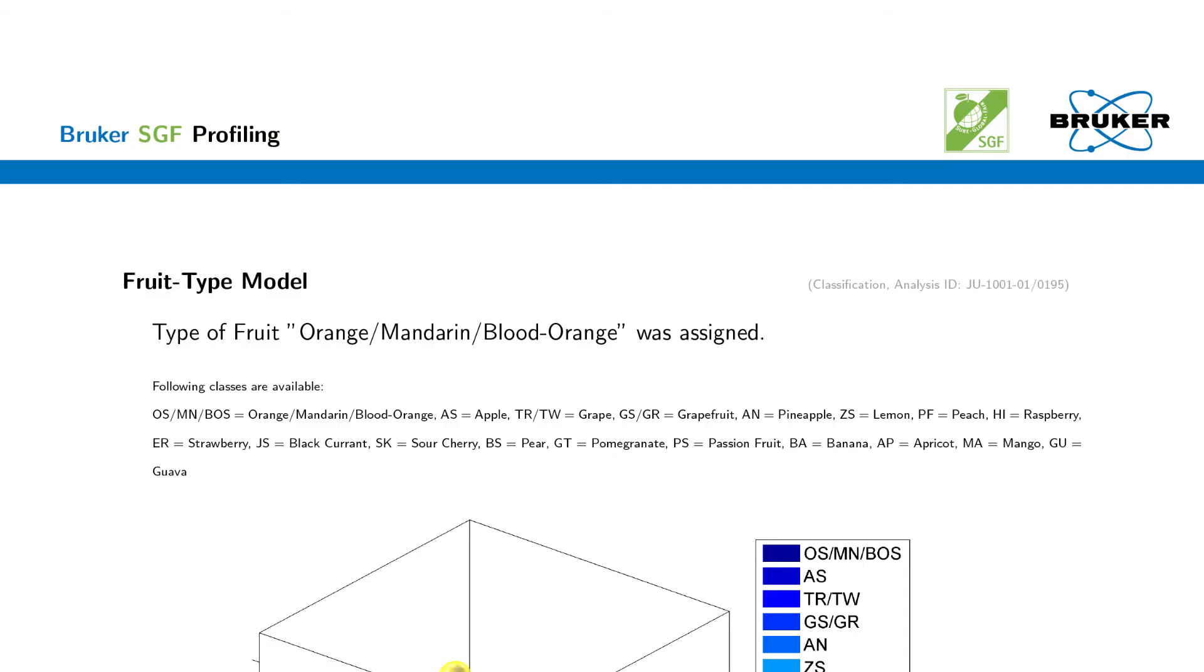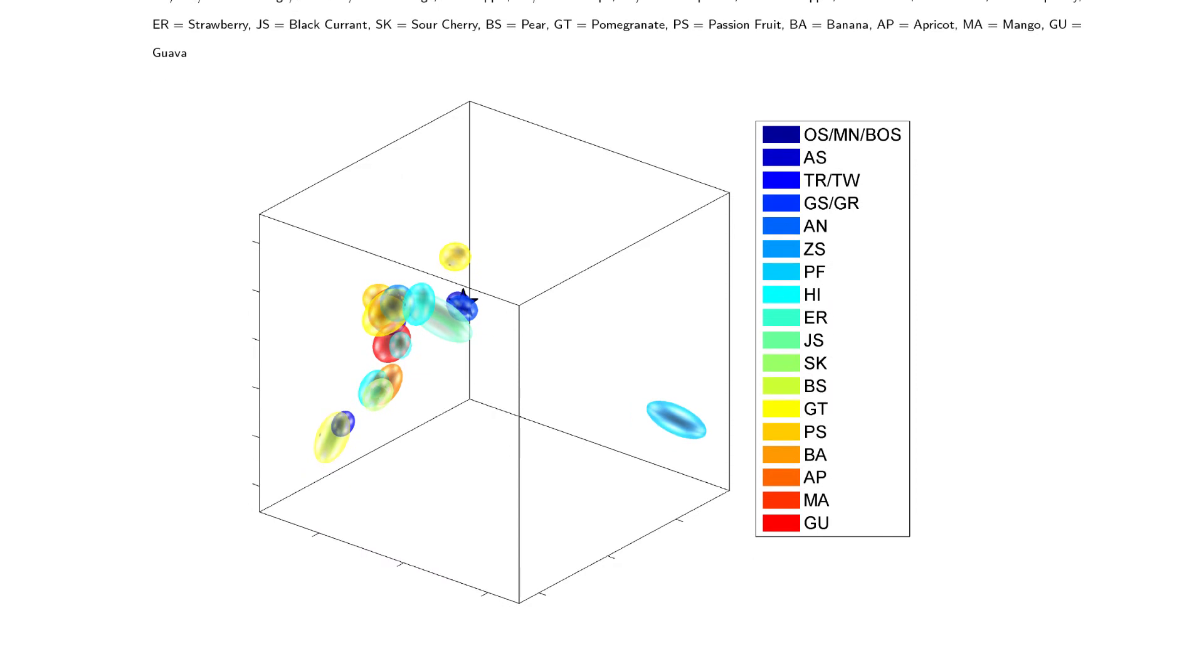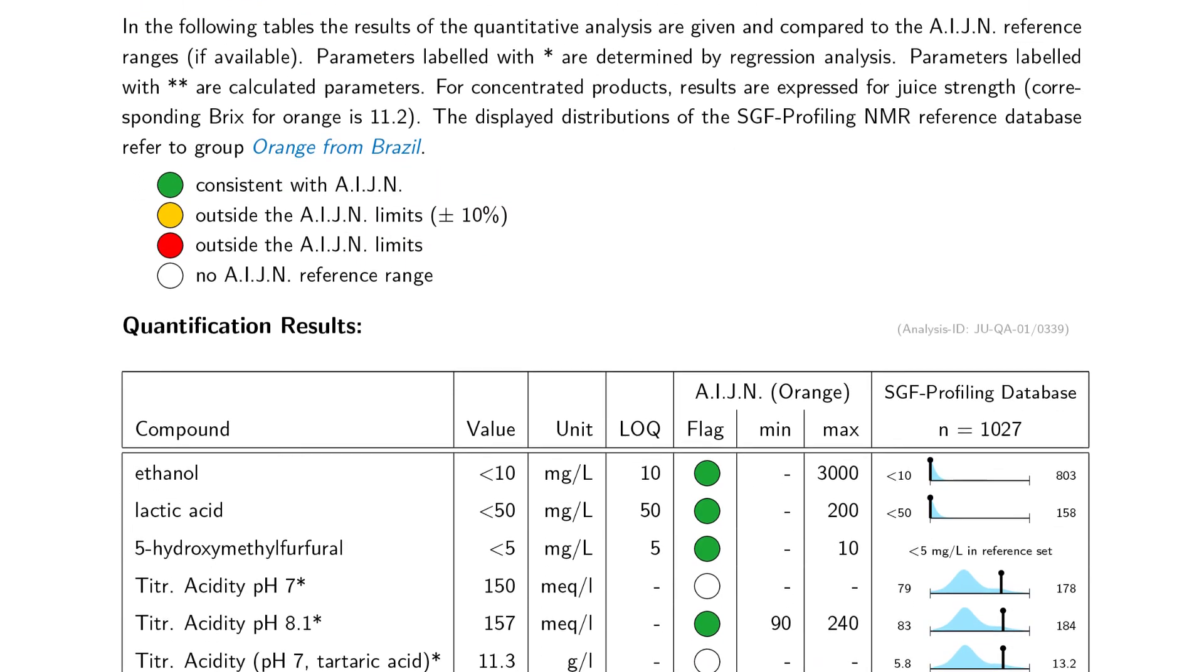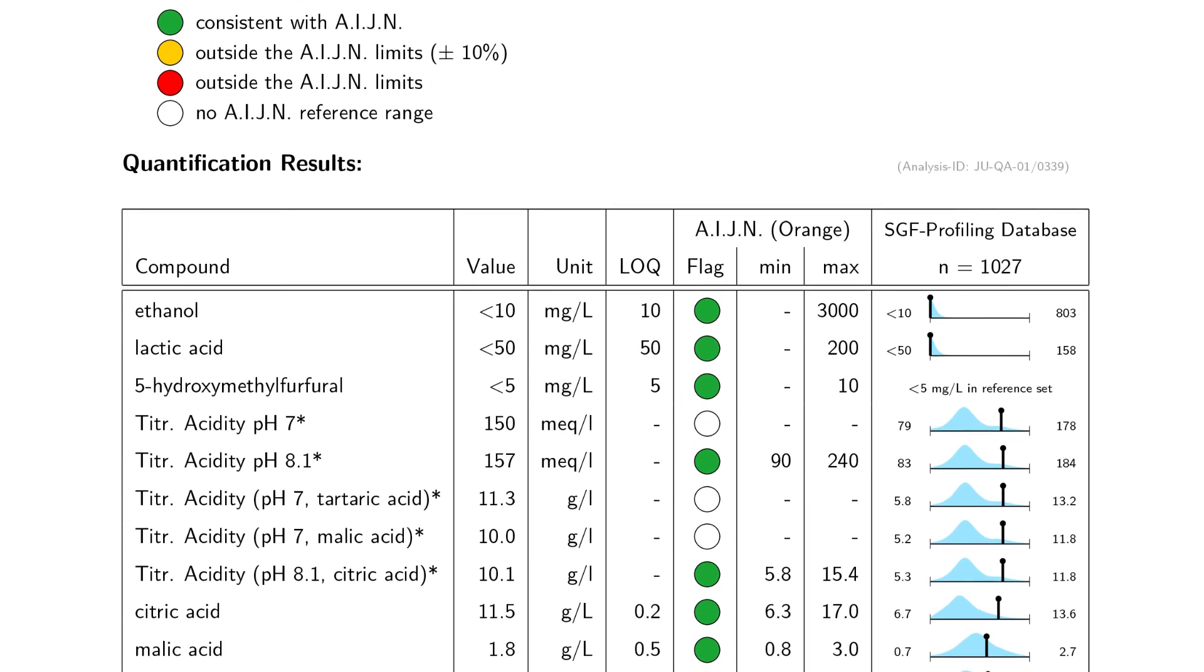As part of the sample sequence, a report is automatically generated and contains juice-specific compound quantification and statistical analysis, such as juice variety, fruit content.